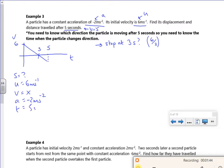T equals 5. So I'm going to use S equals UT plus a half A T squared. So S is 6 lots of 5, which is 30. A half lots of minus 2, which is minus 1, times 5 squared. So I've got 30 take 25. S is 5 meters.